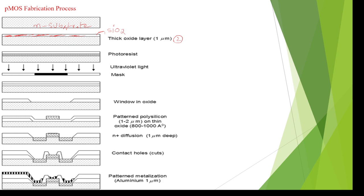In the third step, the total surface is deposited with a photo resist layer to get an even surface. If any ups and downs are present, the photo resist layer smooths them out.